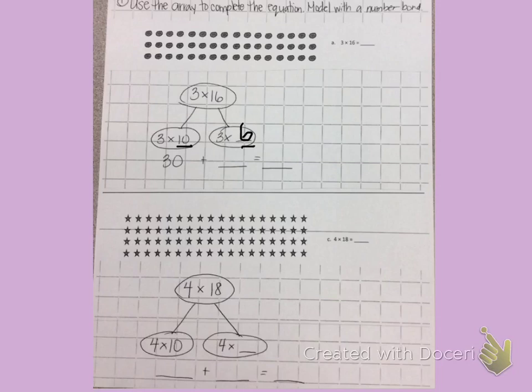I multiplied 3 times 10 to give me 30. Now I am going to multiply 3 times 6. Counting by 6, 3 times 6, 12, 18.